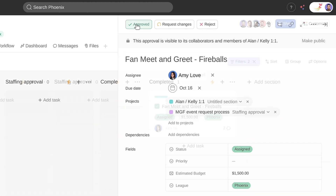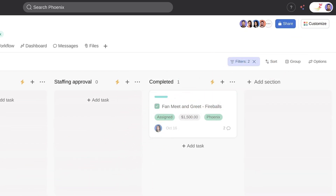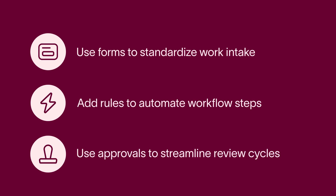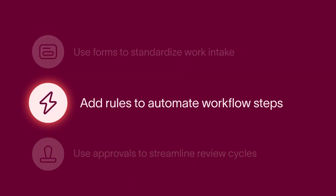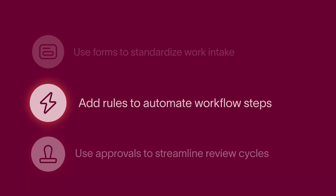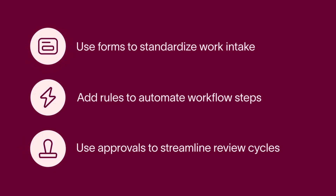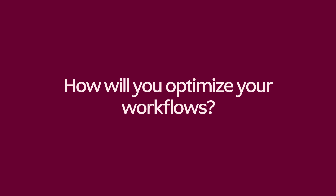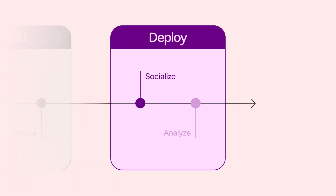Glad to hear it, Alan. To recap, we identified several ways to optimize an ongoing process workflow. First, use forms to standardize work intake. Add rules to automate task assignment, custom field updates, section changes, and notifications. And finally, utilize approvals to streamline review cycles. Take a moment to consider: what will you optimize in your workflow to save time and improve collaboration? Up next, you'll learn how to socialize a workflow with your team to ensure successful adoption.